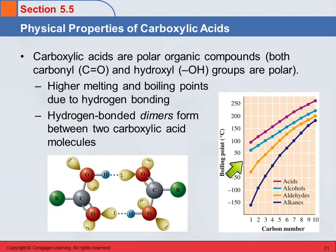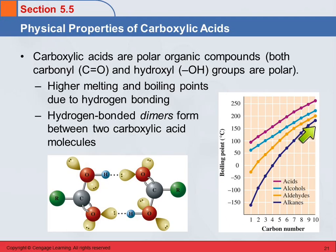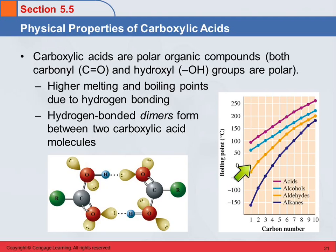And we see that in this graph. Here are the acids — we're graphing boiling point versus number of carbons. We see the alkanes, which only have London dispersion forces, having the lowest. And then aldehydes, which have some polarity with that carbonyl group but no hydrogen bonding. And then we see the alcohols next, and then the carboxylic acids with the highest melting and boiling points.